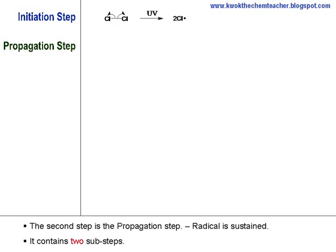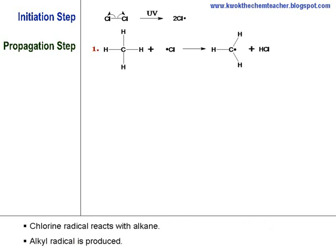In the second step of this mechanism, it is the propagation step. This is when the radical has been sustained and it contains two sub-steps. The first sub-step would be the chlorine radical to react with the alkane molecule so that an alkyl radical can be produced.